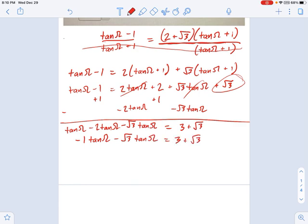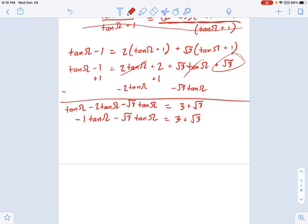tan minus 2·tan is going to be -1·tan(Ω) - √3·tan(Ω) equals 3 + √3. And now what you're going to do is recognize that you have a GCF, a greatest common factor that you can pull out, called tangent. And what's left behind? -1 - √3. The right side hasn't changed.